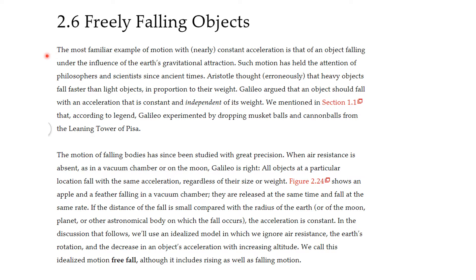The most familiar example of motion with nearly constant acceleration is that of an object falling under the influence of the Earth's gravitational attraction. Aristotle thought erroneously that heavy objects fall faster than light ones in proportion to the weight. But Galileo argued with this, and that was very courageous at the time because Aristotle was a big deal.